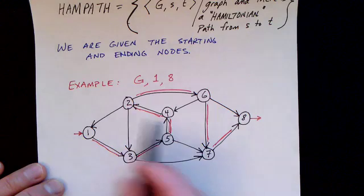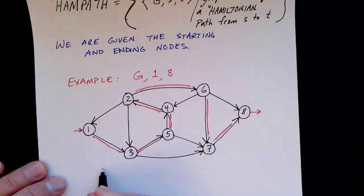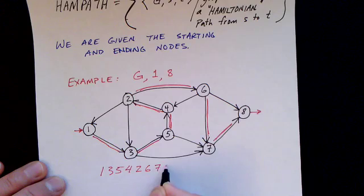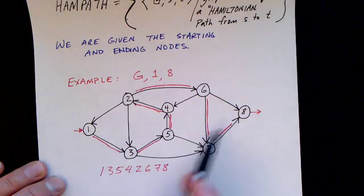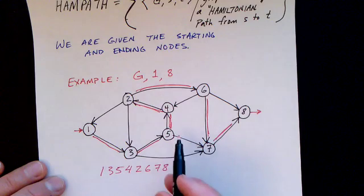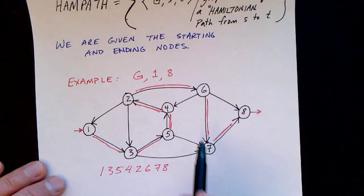One, three, five, four, two, six, seven, eight. So let me write those numbers down. That number, which has, in this case, our graph has eight nodes. This number has eight digits. That number is a solution to this problem. And to find that number and to announce that, yes, there is a Hamiltonian path, is what this problem is about.